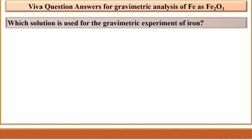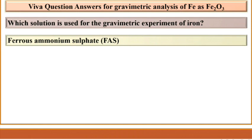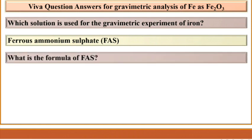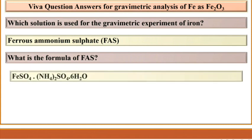Which solution is used for the gravimetric experiment of iron? Ferrous ammonium sulfate, that is FAS. What is the formula of ferrous ammonium sulfate? It is FeSO₄·(NH₄)₂SO₄·6H₂O.